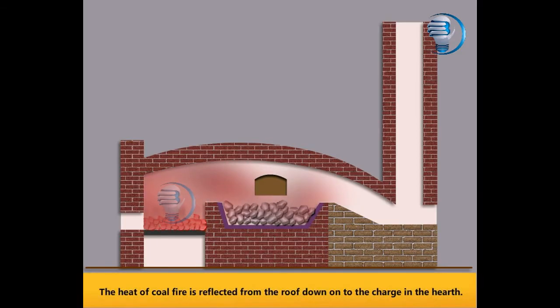The heat of coal fire is reflected from the roof down onto the charge in the hearth.